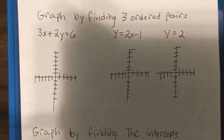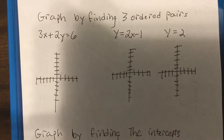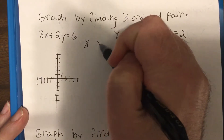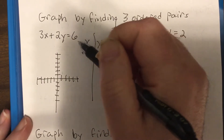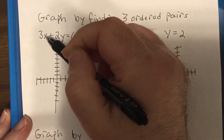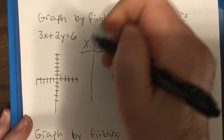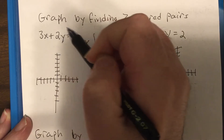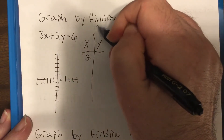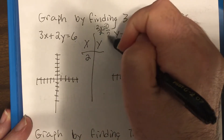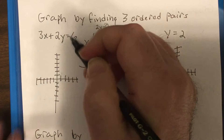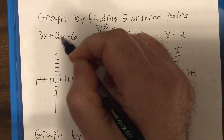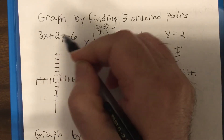Okay, algebra students, let's do a review. Do these three problems: find three ordered pairs and then graph them. So let's put in two — three times two is six, subtract six, you'd have two y equals zero, so divide by two, y is zero.